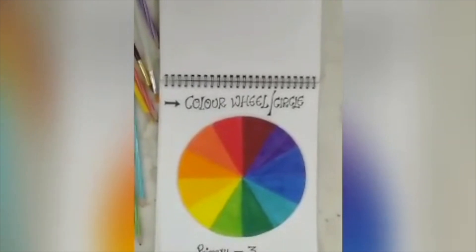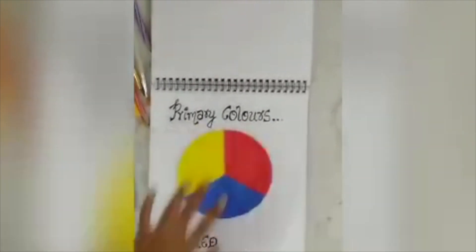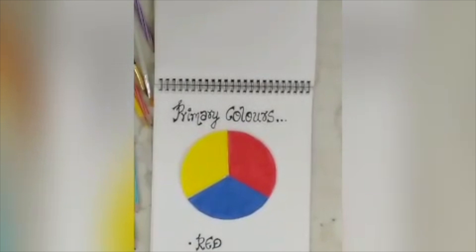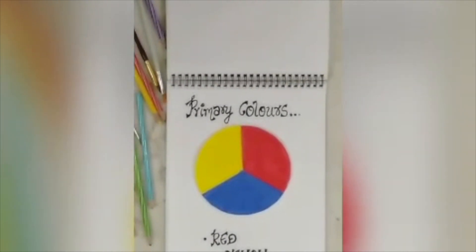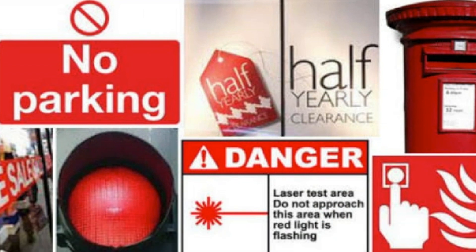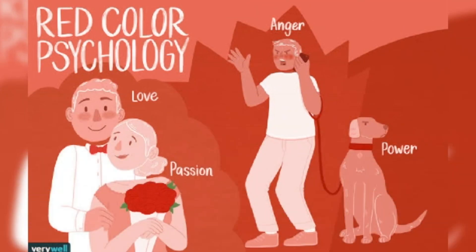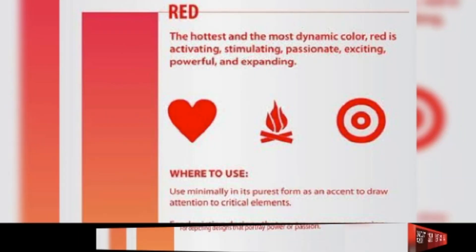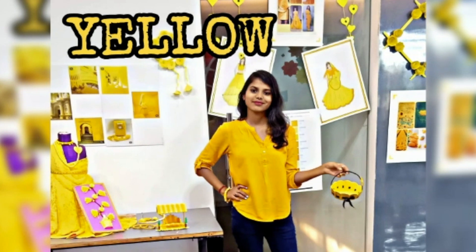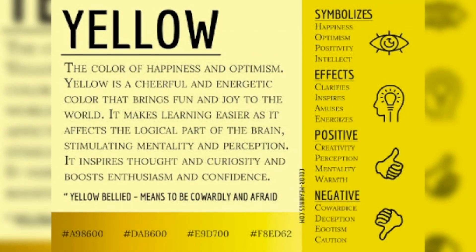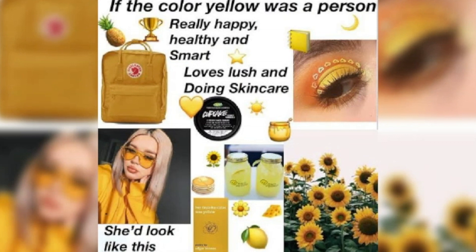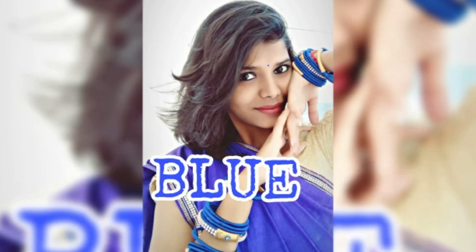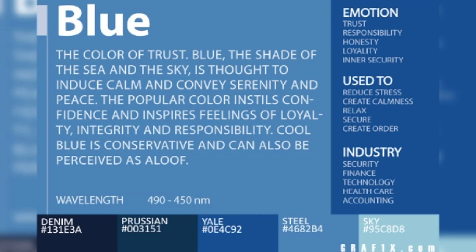Now, what are primary colors? These are a set of three colors — red, yellow, and blue — which are useful to make a range of colors. These colors cannot be created by mixing other colors because these are natural colors, as you can see here.